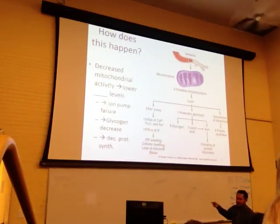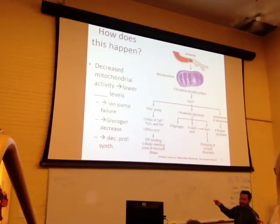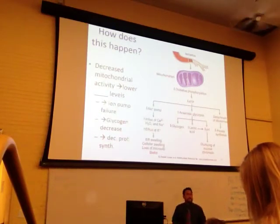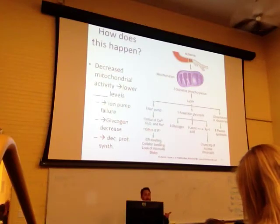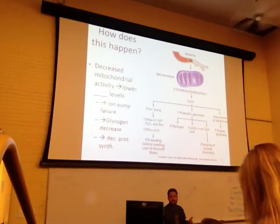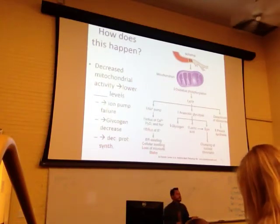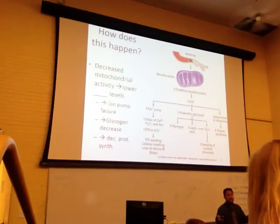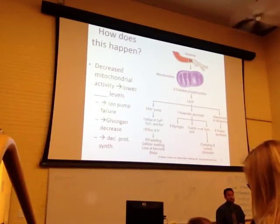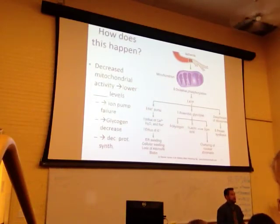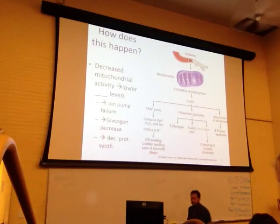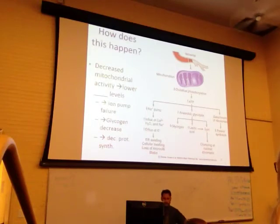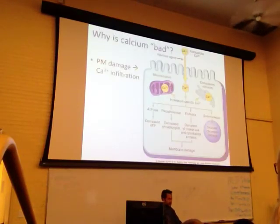Let's look at the summary: decreased mitochondrial activity lowers ATP. This leads to ionic pump failure, decreased glycogen, and decreased protein synthesis. Protein synthesis is itself an energy-requiring process — you can't transcribe and translate if you have no energy within the cell. This is a very important mechanistic slide; walking through it like this makes it fairly clear.